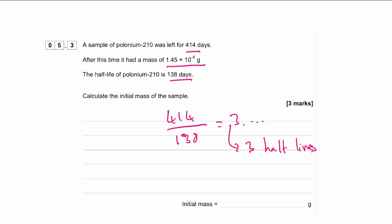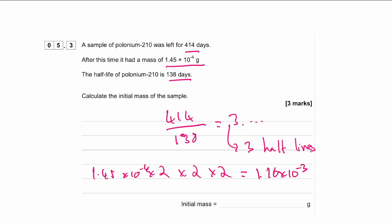The half-life tells us what happens to the mass of the polonium. At the end of three half-lives it had 1.45 times 10 to the minus 4 grams, so before each half-life it was doubled. Before the first half-life, times 2; before the second, times 2 again; before the third, times 2 again. So we double it three times to get the initial mass: 1.45 times 10 to the minus 4, doubled three times. Put that in your calculator and you get 1.16 times 10 to the minus 3 grams.